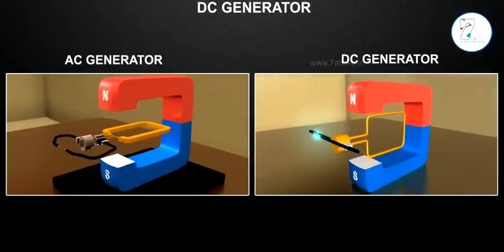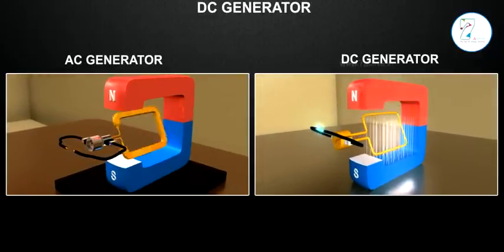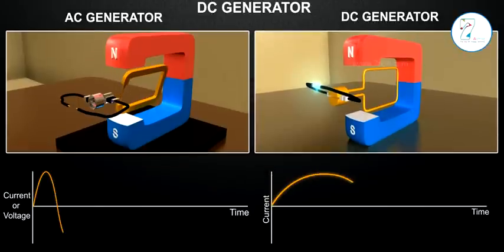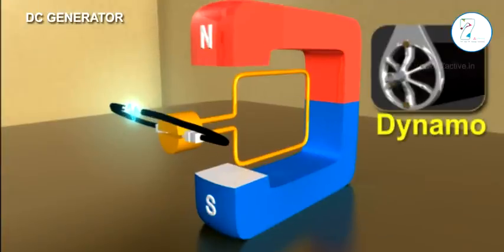Like an AC generator, a DC generator works on the principle of electromagnetic induction. However, a DC generator produces direct current and is commonly used in small scale power generation devices such as a dynamo.